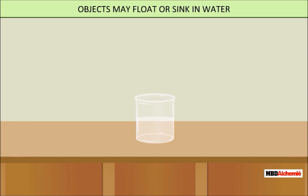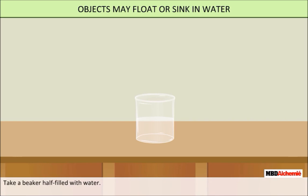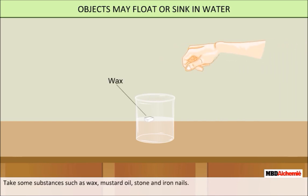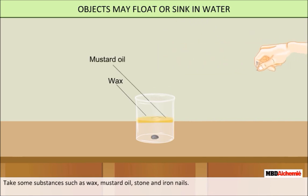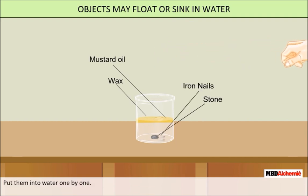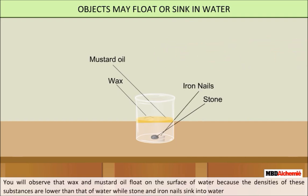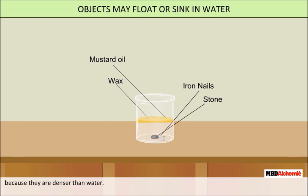Objects may float or sink in water. In this activity, we will demonstrate that some substances float on the surface of the water while others sink. Take a beaker half filled with water. Take some substances such as wax, mustard oil, stone, and iron nails. Put them into water one by one. You will observe that wax and mustard oil float on the surface of water because the density of these substances is lower than that of water, while stone and iron nails sink into water because they are denser than water.